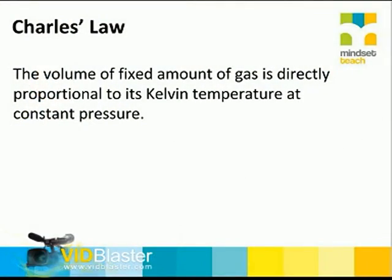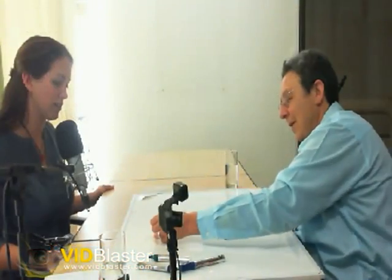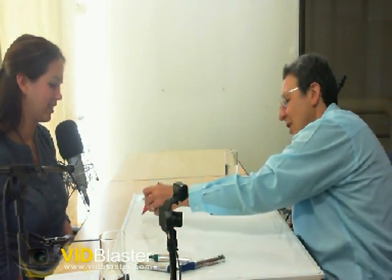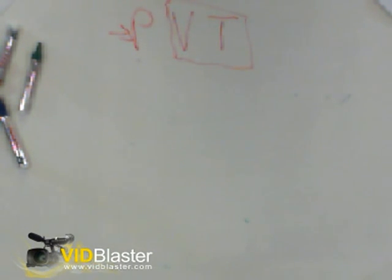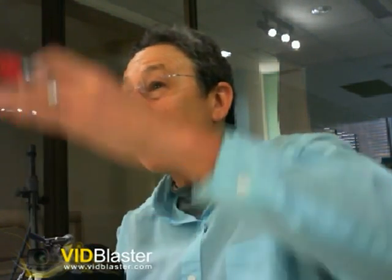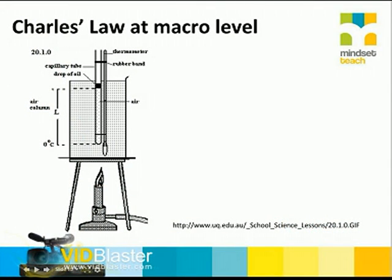Charles's Law: the volume of a fixed amount of gas is directly proportional to its Kelvin temperature at constant pressure. So now we are looking at temperature and volume, and keeping pressure constant. It's very easy to keep pressure constant — anything you do in the atmosphere, as long as you don't squash it in any way, you are keeping pressure constant. The experimental setup shows some gas in a small tube with a little drop of oil to trap the air. The oil easily moves up when the gas expands.